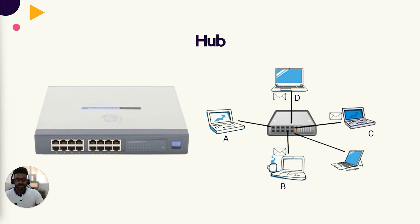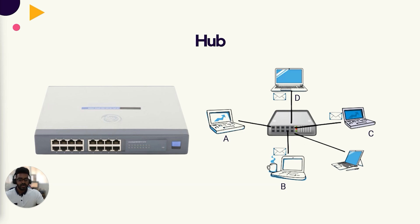One option for connecting internal devices is a hub. A hub is an older device that allows us to connect client devices together with ethernet cables. The problem with hubs is that when data comes in, the hub simply forwards it to all connected devices — it's up to the client devices to determine if the data is meant for them. This leads to a large amount of network traffic, which can cause collisions and data loss. This setup is also not very secure and makes intercepting data quite easy if an attacker can physically connect to the network.